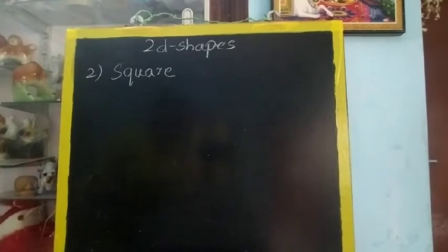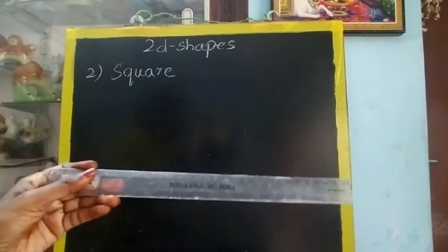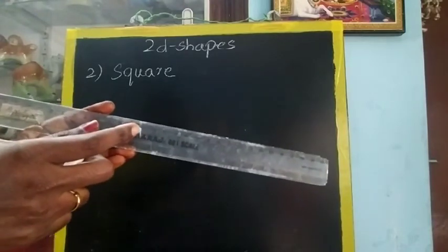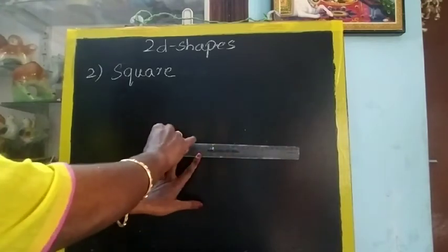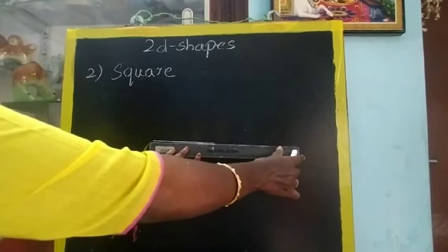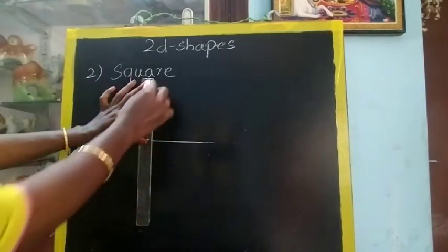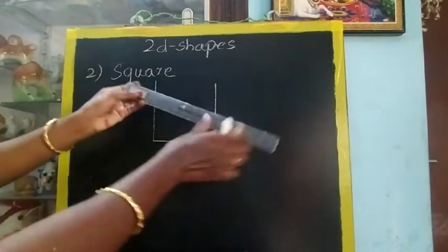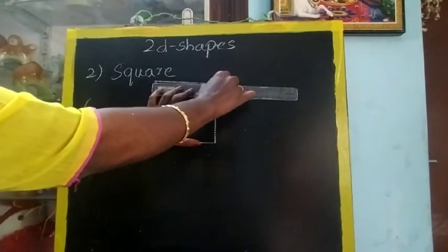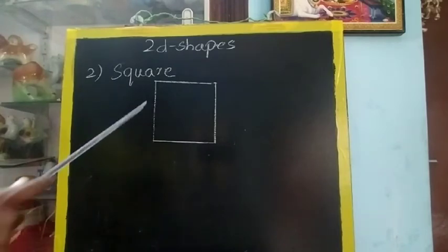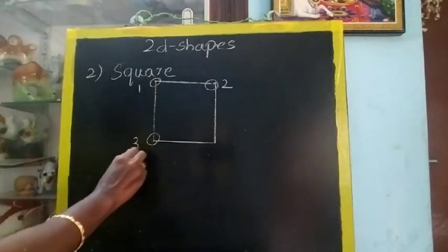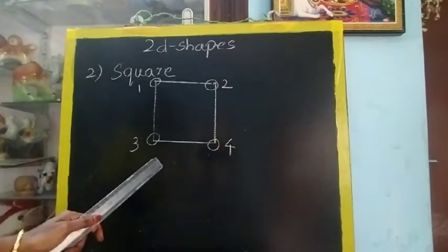So how to draw equal sides? It is very easy. You must use a plastic transparent scale only — no wooden scale, no steel scale. Mark a point somewhere on your scale with pencil. This side only you will take for all 4 sides. First draw the base, always start from the base. Then keep from the marking and draw the next side. Again keep from the marking for the third side. Join them and you get a square. It has 4 sides and 4 corners and all the sides are equal.